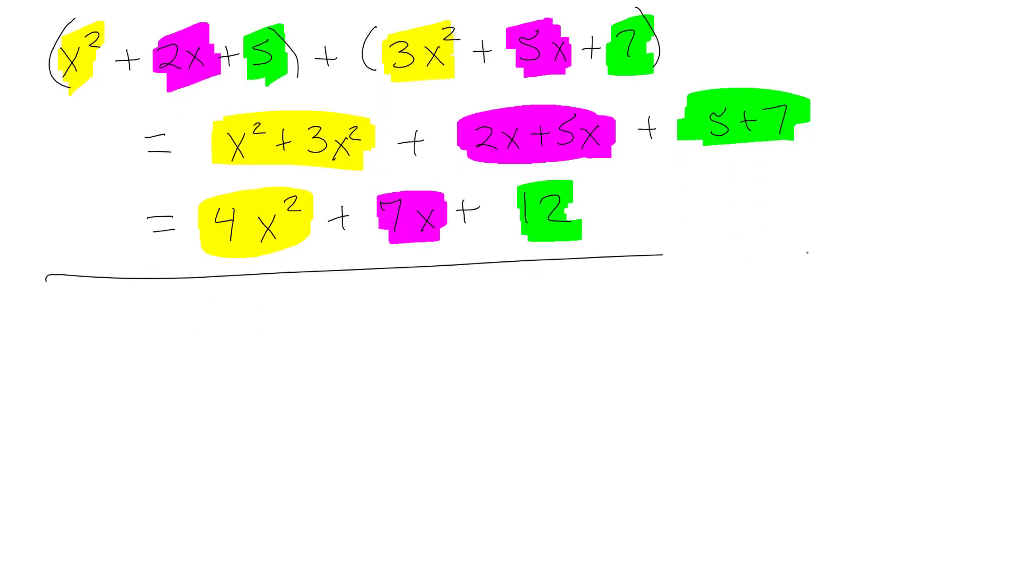Now, let me give you a very similar problem, but I'm going to throw one of the terms out. So let's say x squared plus 2x plus 5, and then I'm going to add it to 3x squared plus 7. This is a very similar problem, except not all the terms have a match, and that's okay. So x squared and 3x squared still go together. Now 2x lost his partner, that's okay. He just doesn't get added to anybody, so we don't have to freak out. We don't always have partners for everybody. And then I have 5 and 7.